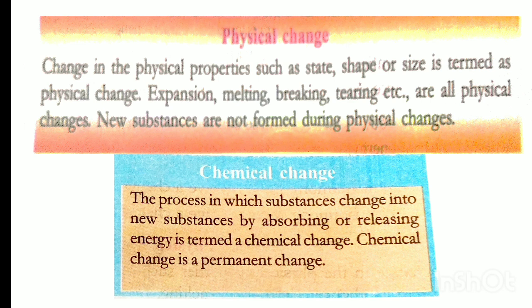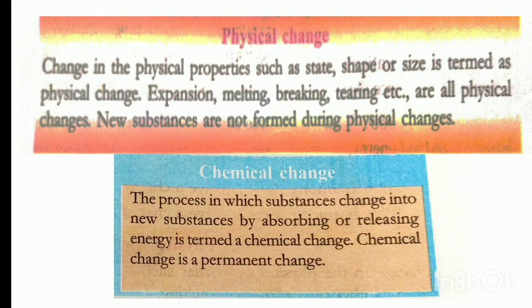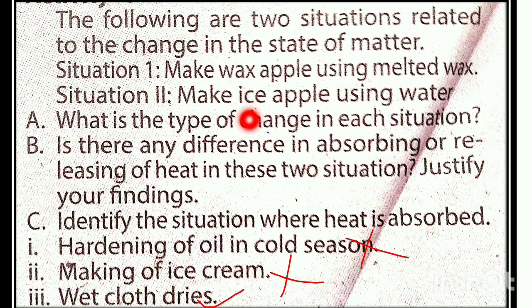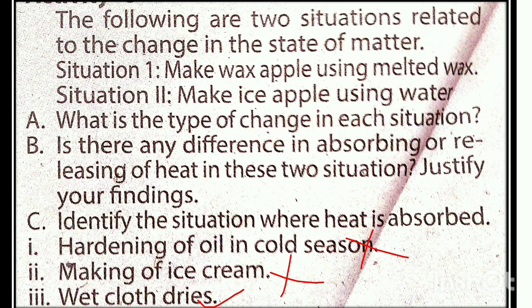Examples of chemical changes: cooked rice tastes sweet when chewed; color of filling changes with excess; color of clothes fades when exposed to sunlight; iron rods rust; mango ripened. In the wax and ice situations, wax melts — it is only a physical change.